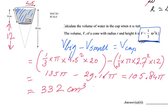So this is 135π take away 29.16π, that's 105.84π. I worked it out, then I get all the decimals and I round it to 332. The unit is centimeters cubed.